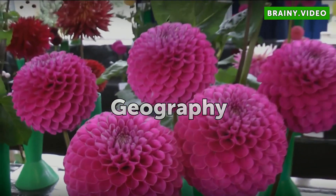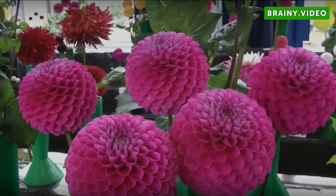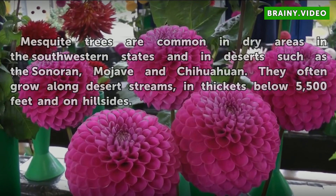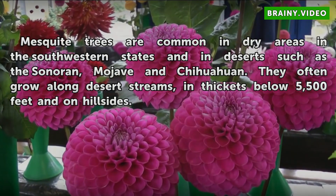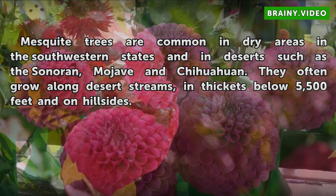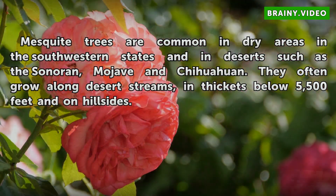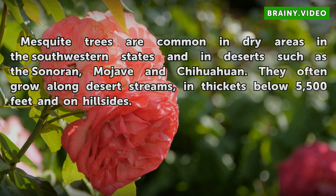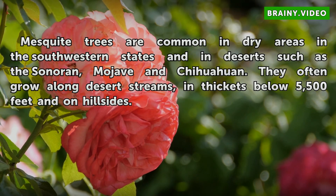Geography. Mesquite trees are common in dry areas in the southwestern states and in deserts such as the Sonoran, Mojave, and Chihuahuan. They often grow along desert streams, in thickets below 5,500 feet, and on hillsides.